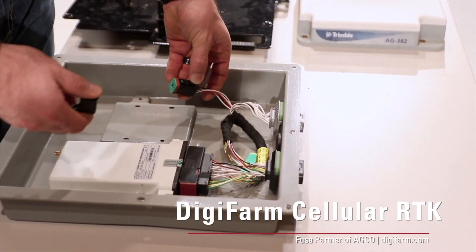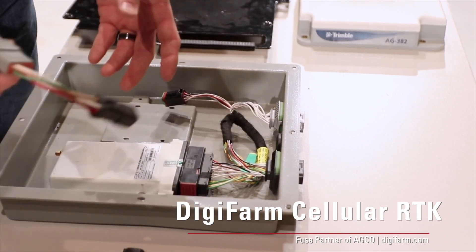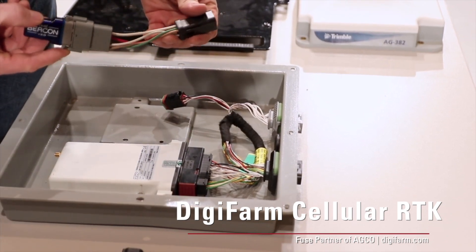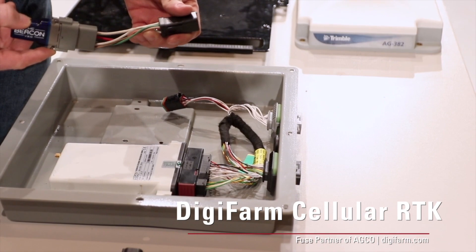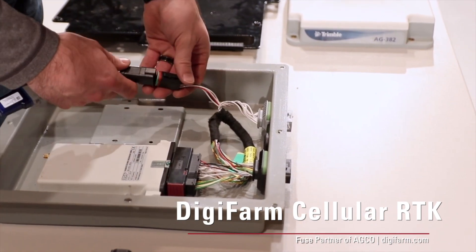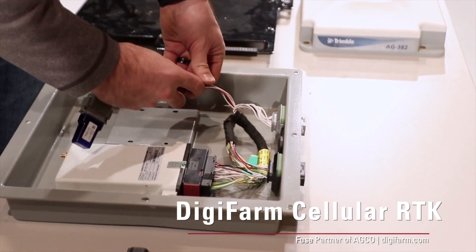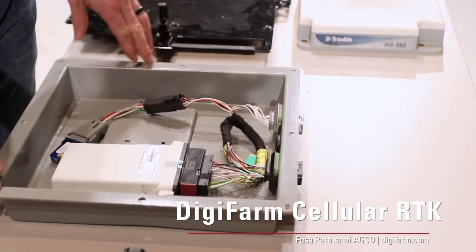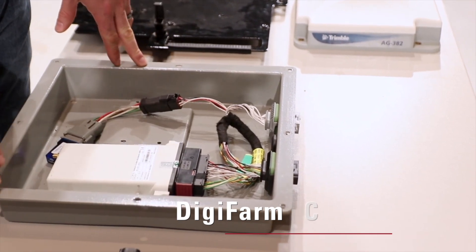Simply take this cover off. We already have the beacon that's been put into the adapter harness for this particular machine. We'll simply plug this in, and now your beacon is set up with the system to run the Digifarm RTN network.